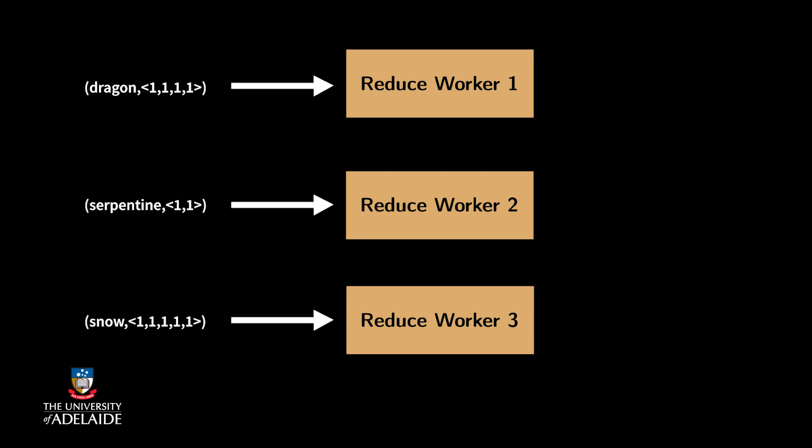Now it's time for reduce workers to start their job. Each reduce worker is given a key and all of its values. For example, if there are four pairs with key dragon, then one of the reduce workers is given dragon as the key and four ones as the values.